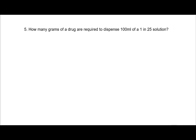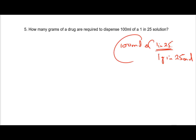Next: how many grams of a drug are required to make 100 milliliters of a 1 in 25 solution? Starting from the end: 1 in 25 means 1 gram in 25 milliliters. For 100 milliliters, we don't even need C1V1 = C2V2 — we simply calculate: if 1 gram is in 25 ml, then 100 ml requires 4 grams.